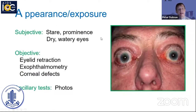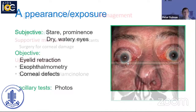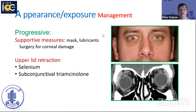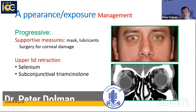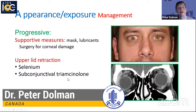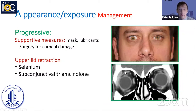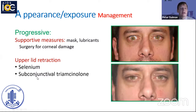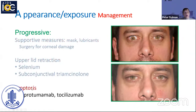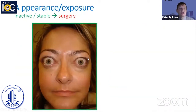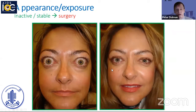Once you've documented how severe the strabismus or ductions are, determine if the patient is in a progressive phase based on any change in the VISA parameters. If so, patch prisms and various immunomodulators — steroids plus radiotherapy, teprotumumab or tocilizumab if available — are offered. Once disease reaches a stable point, surgery or patches and prisms are offered to realign the patient. For appearance and exposure changes — whether from myopathic disease or the lipogenic fat expansion with lid retraction — if there is progressive worsening in lid retraction, proptosis, or contrast enhancement of the levator, subconjunctival corticosteroid into the levator area, selenium supplementation, and teprotumumab are all options.